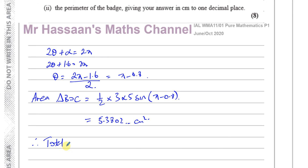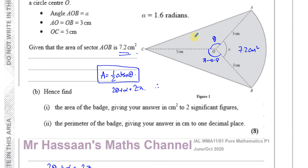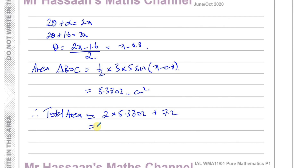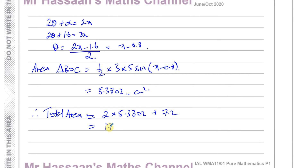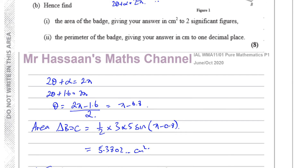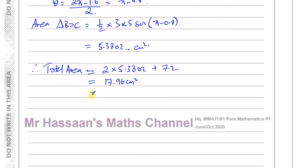The total area of the whole badge is 2 times 5.3802 plus 7.2, because we have the area of one triangle times two plus the sector area. That gives us 17.96 centimeters squared. The question asks for two significant figures, so that becomes 18 centimeters squared — the nearest whole number. That's the answer for the area part.